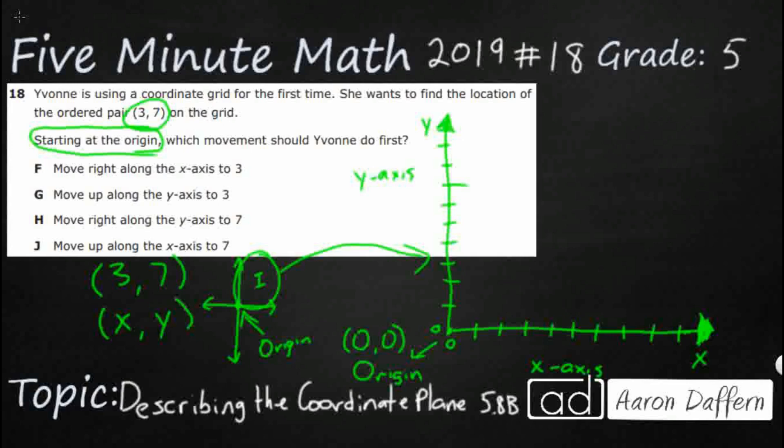X comes before y and so the x-coordinate comes before the y-coordinate. And so we always move along the x-axis first because that is going to help us find our x-coordinate.